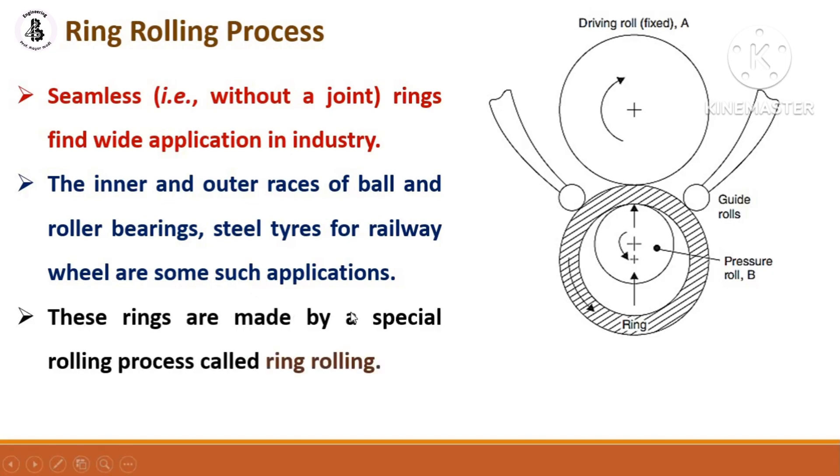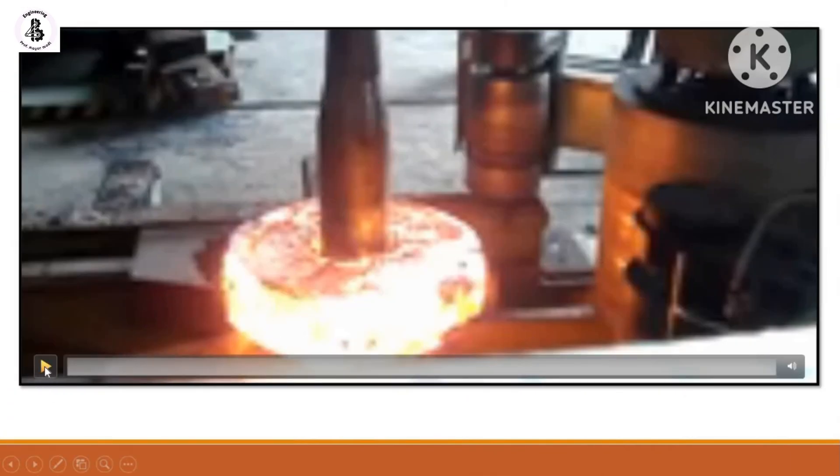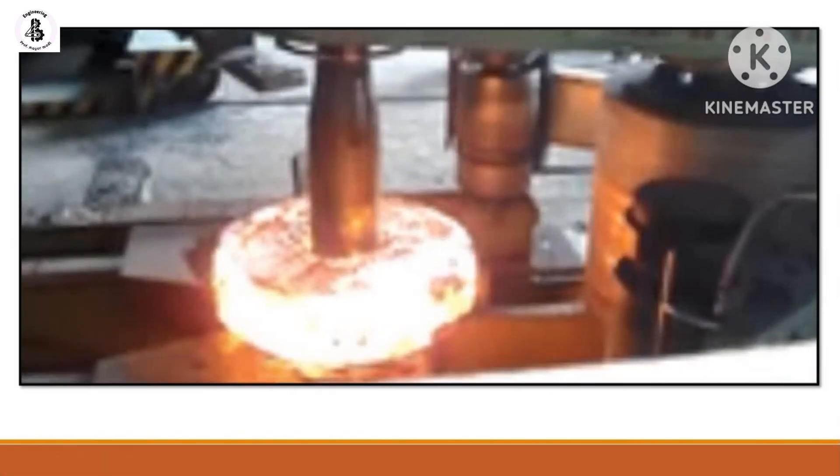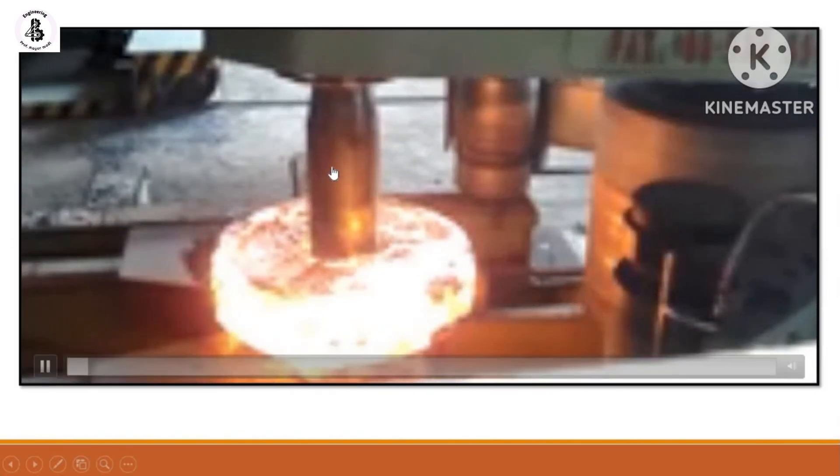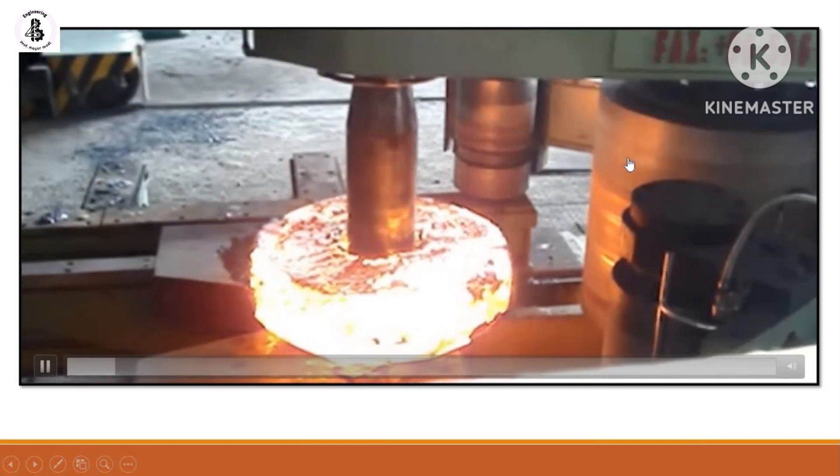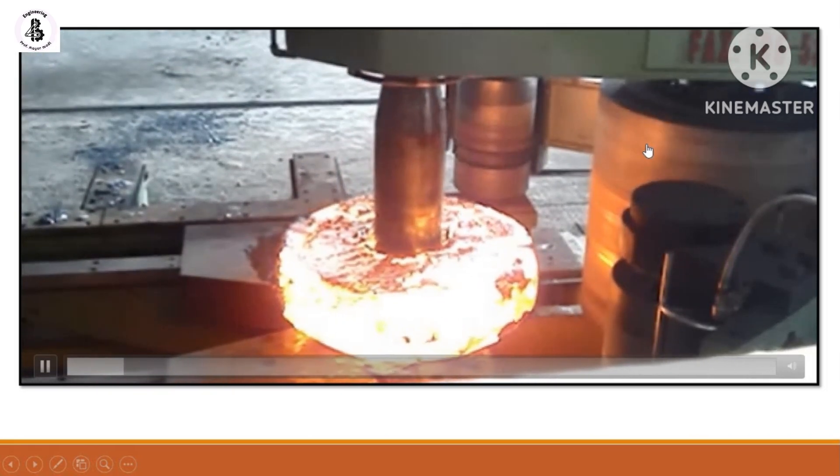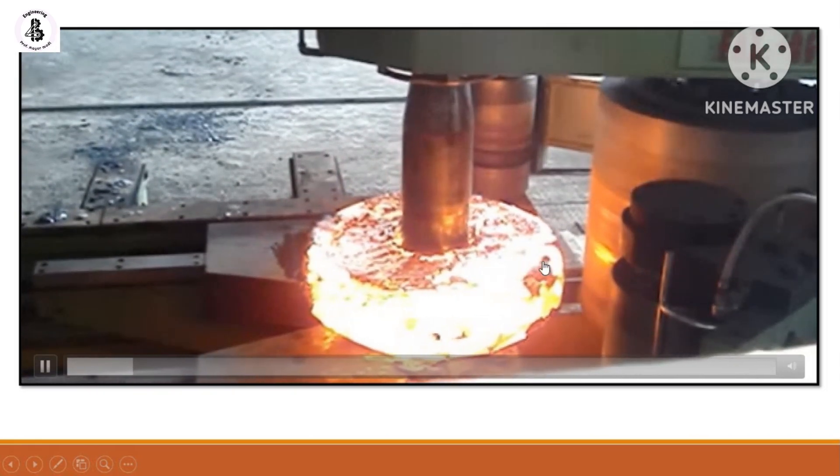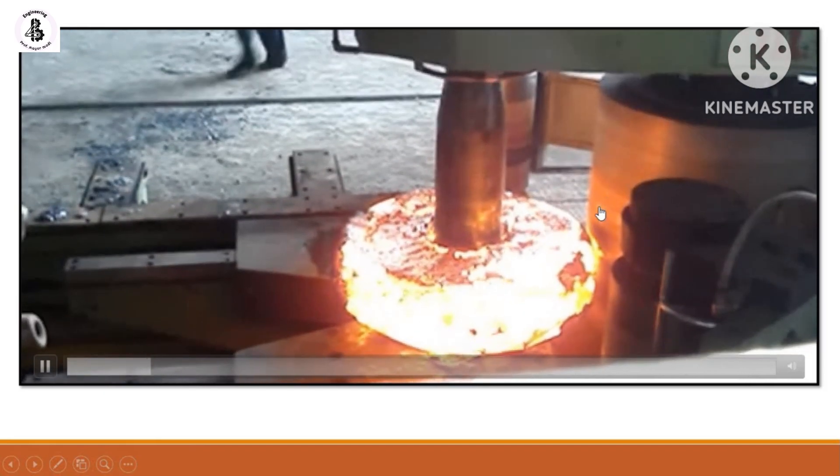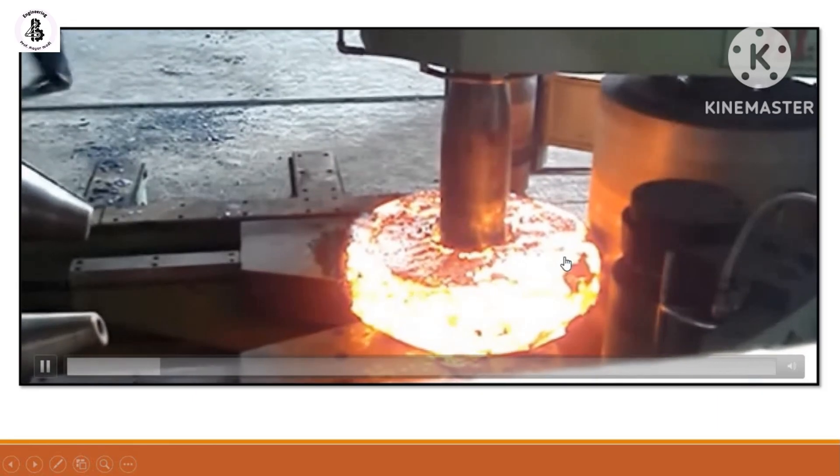These rings are made by a special rolling process called ring rolling. Let us see one of our videos. Just you can see this is the center roll which will be adjusting, and this is my outer periphery or you can say the driving roll. Once this hot metal part comes in contact with this, it will also rotate.